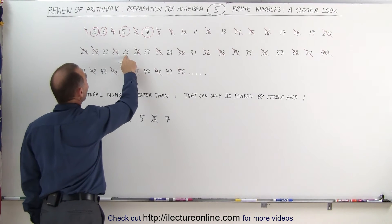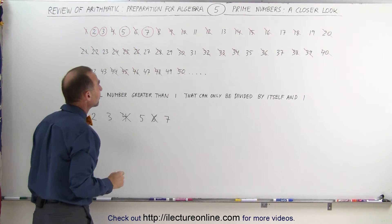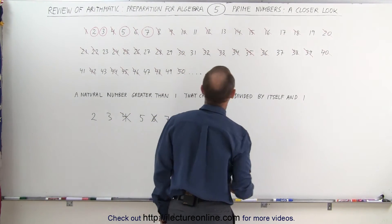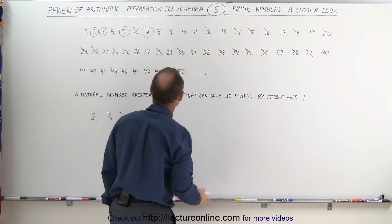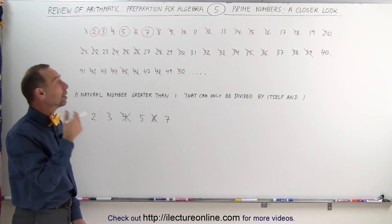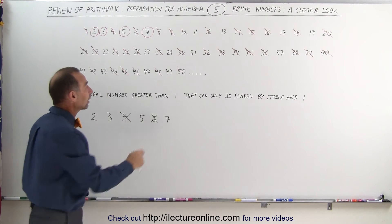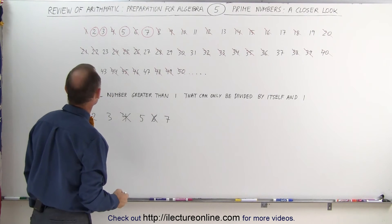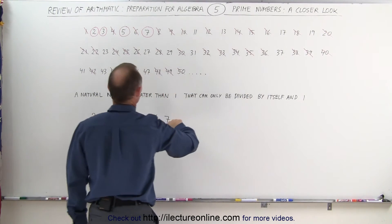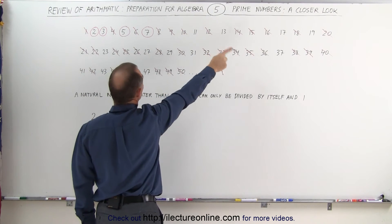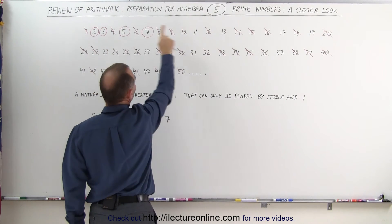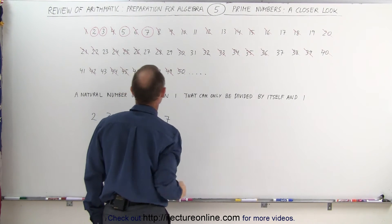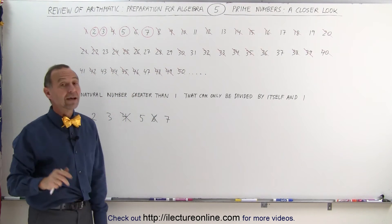For example, the number 25 can be divided by 5, so that's not a prime number. 35 can be divided by 5, not a prime number. I already took care of 45. How about the number 7? Any numbers left that can be divided by 7? Well I know that 49 is 7 times 7, so that can be divided by 7. 1 times 7 is 7, 2 times 7 is 14, 3 times 7 is 21, 4 times 7 is 28, 5 times 7 is 35, 6 times 7 is 42, 7 times 7 is 49.